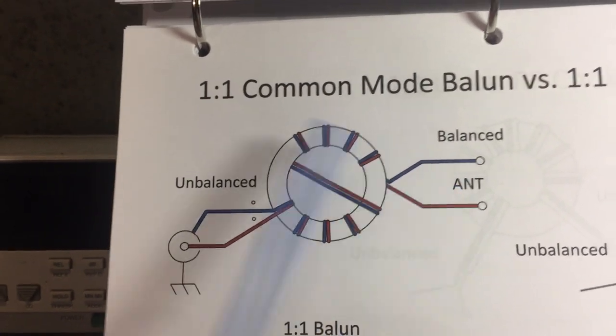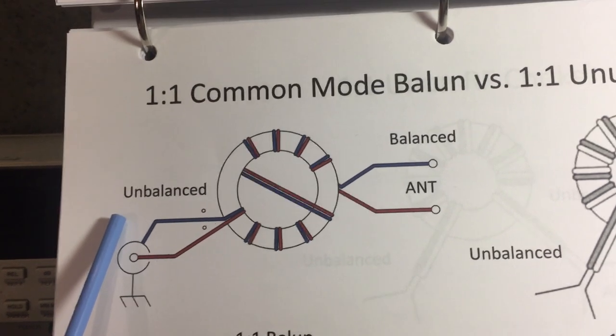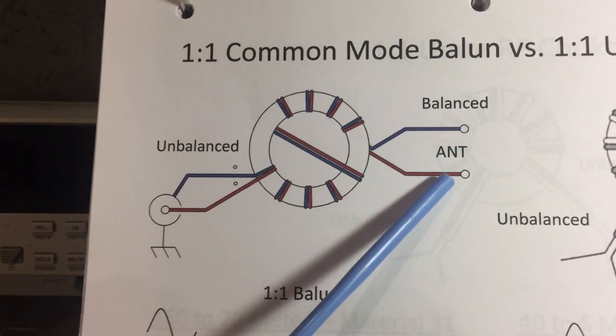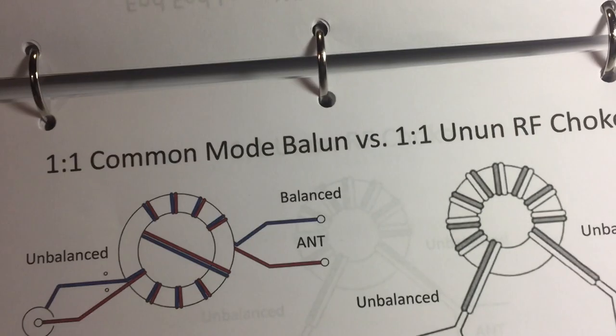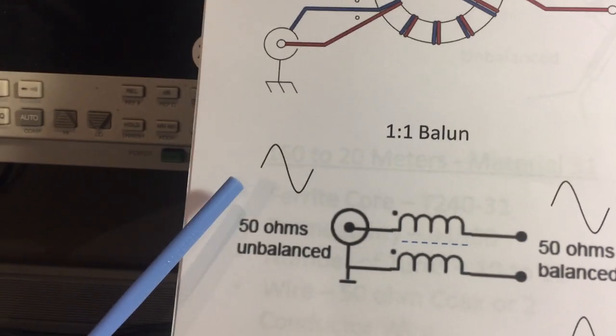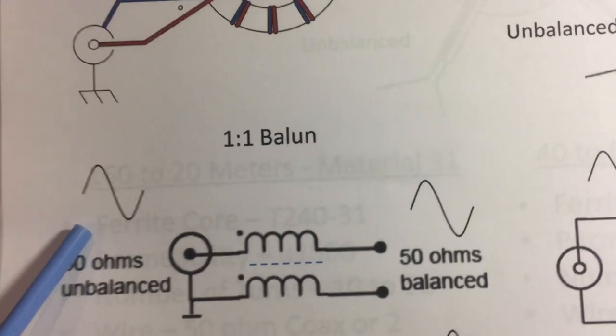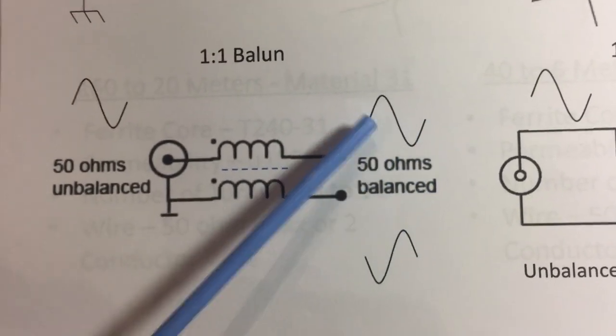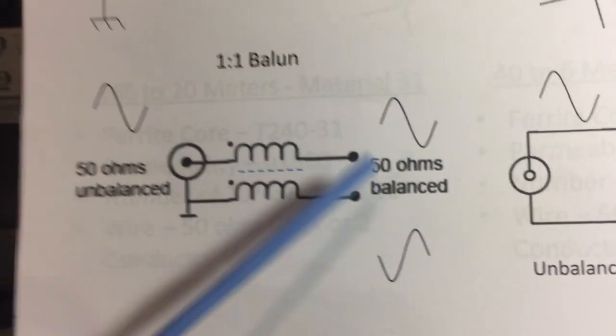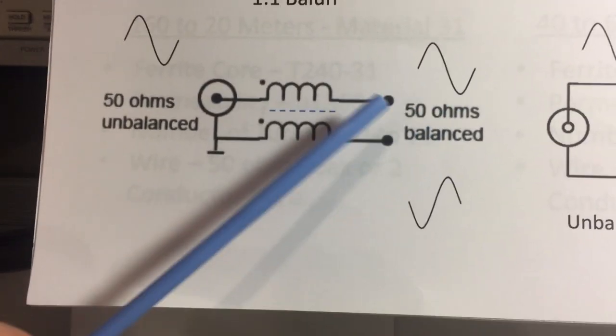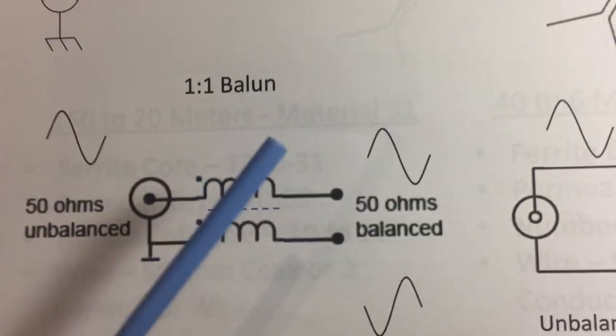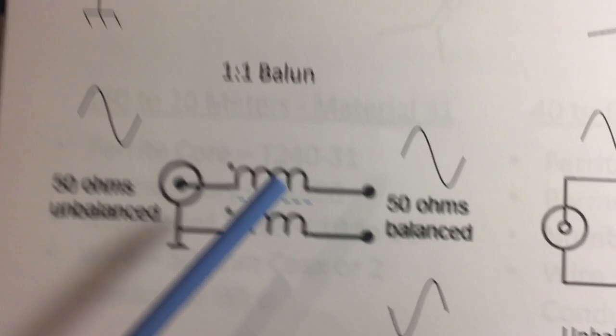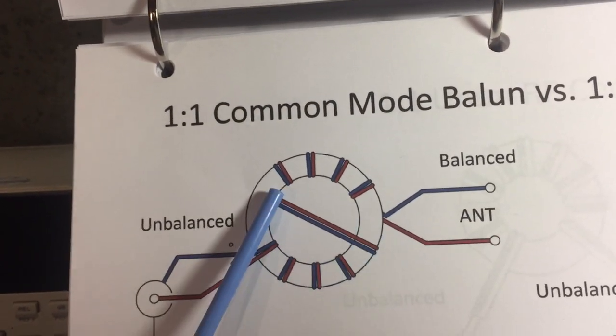Unbalanced would be the output of our transceiver with the center conductor of the coax going to ground. This converts it to balanced with two signals 180 degrees out of phase. Here's the carrier from the transceiver, and the balanced side shows two sine waves 180 degrees out of phase. I would use this to drive a center-fed antenna like a horizontal dipole with two radials. You can see the crossover in the winding.